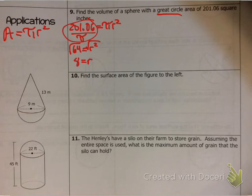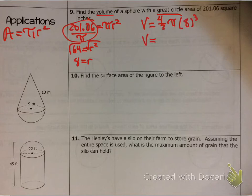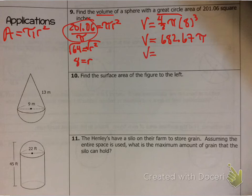Now that you have the radius, you can find the volume. Volume equals four-thirds times π times 8 cubed. When you do that you get 682.67π, and multiplying by π gives 2144.66 cubic inches. You see how that works — the key idea is working backward to find the radius first.